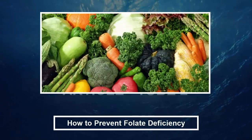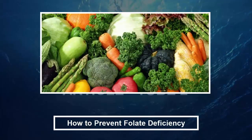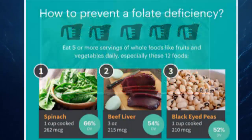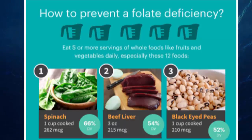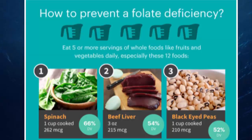Folate is also naturally found in some animal products, including liver and poultry. Generally speaking, it should be pretty easy to prevent folate deficiency by eating a well-balanced diet. But studies have shown that folate absorption varies widely from person to person. There are several factors that influence how much folate someone can absorb from the foods they eat, including their levels of zinc and the health of their kidneys, liver and gut.